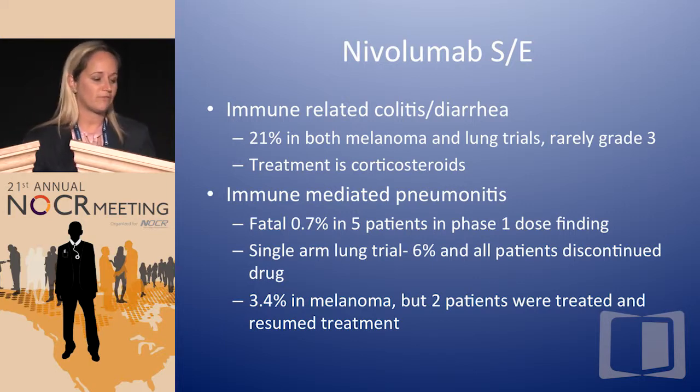Immune-mediated pneumonitis was fatal in 0.7% of patients — only five patients — and that was only in the phase one dose-finding trial. It was not fatal in any phase three trials. In the single-arm lung trial, 6% of patients had to discontinue drug due to pneumonitis. Interestingly, in the melanoma trial, two patients resumed treatment after corticosteroid treatment and were okay. Whereas with EGFR TKIs or ALK inhibitors we usually permanently discontinue, this may be different — we may be able to treat through in the future.